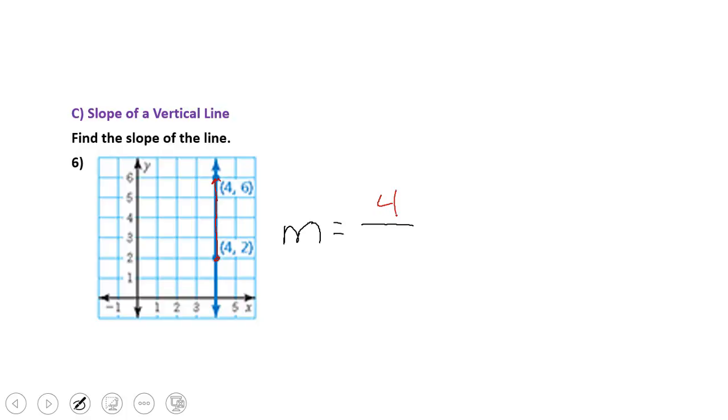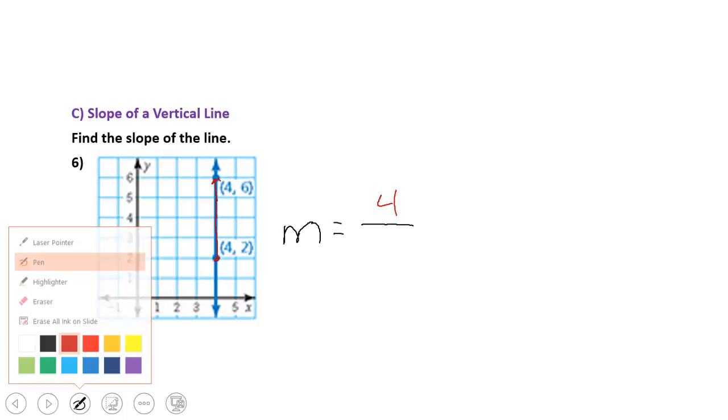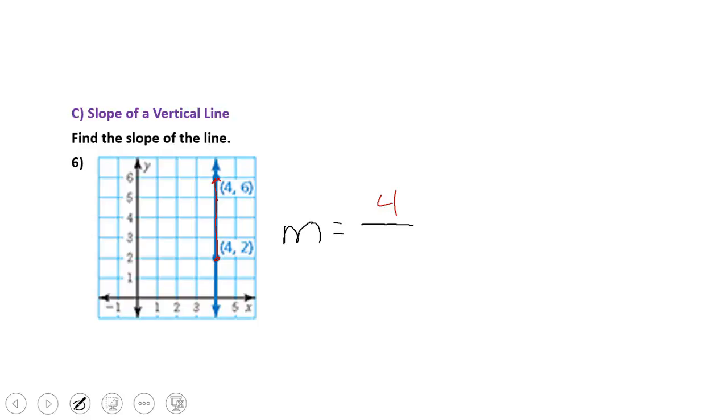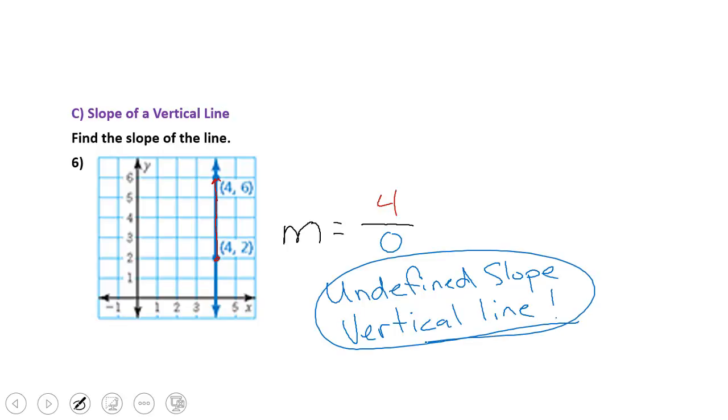Really doesn't matter how far we go up because we can't run. Our run is nothing. We can't run right or left. So our run is 0. And you know from our previous unit that we cannot have 0 in the denominator. Dividing by 0 is undefined. So we describe this as undefined slope. Any line that has an undefined slope is a vertical line. It is undefined slope because we have a 0 in the denominator.